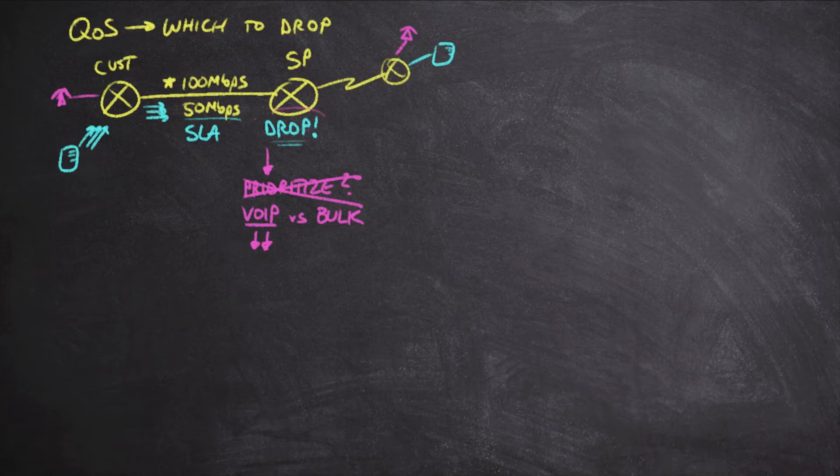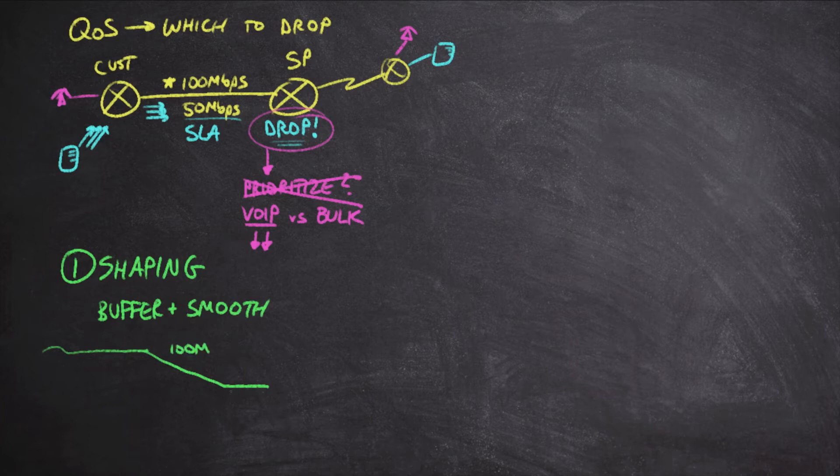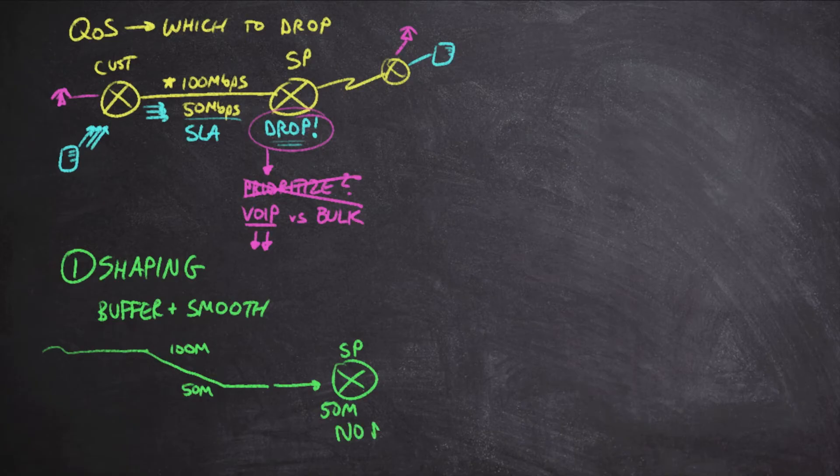Ultimately, we do not want the service provider to drop the packet. The solution to this is to use a technology within the QoS conversation known as traffic shaping. Traffic shaping basically says we're going to buffer the traffic and smooth it out a little bit. The idea here is I'm bringing in 100 megabits per second and I'm going to funnel this down to 50 megabits per second. By the time this traffic is received by the service provider router, it's going to see 50 megabits per second, which means no drops, which is absolutely fantastic.